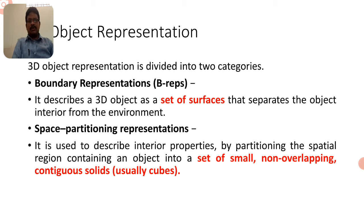The object can be represented in the boundary representation, or B-representation. The second category is the space partitioning representation. The boundary representation describes a set of surfaces that separates the object interior from the environment. This is a very important concept in three-dimensional representation.